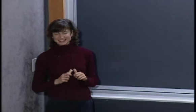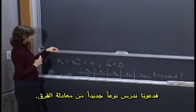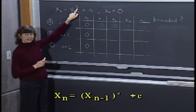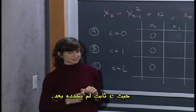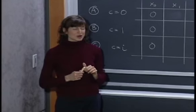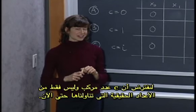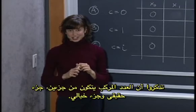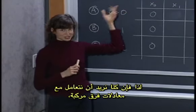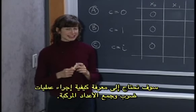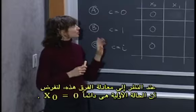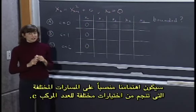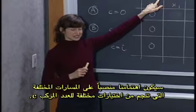Now that you're all trajectory experts, let's consider a new difference equation: xn equals xn minus 1 squared plus c, where c is a constant we haven't specified yet. This time, though, we're going to add a twist — we're going to let c be a complex number, not just the real numbers we've been considering so far. Remember that a complex number has both a real part and an imaginary part, so we'll need to know how to multiply and add complex numbers. We'll assume our initial condition is always x0 equals 0.